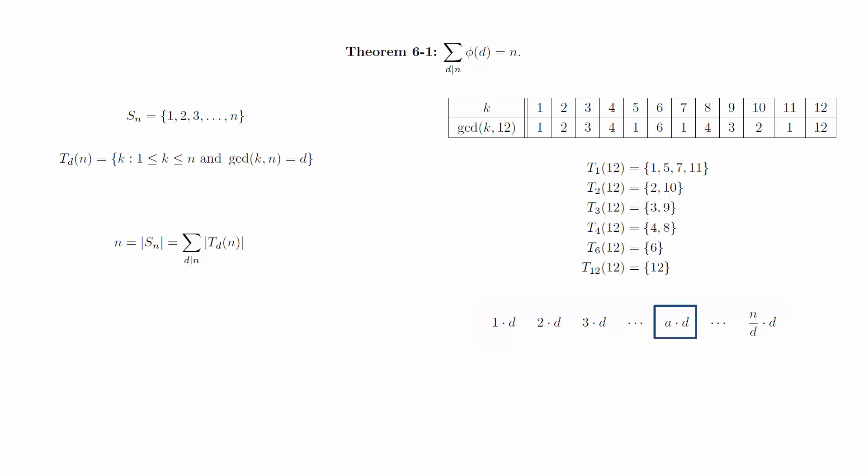Let's focus on some specific element ad. If the GCD of ad and n is equal to d, then by dividing out the common factor of d from everywhere, we get the GCD of a and n over d is equal to 1.